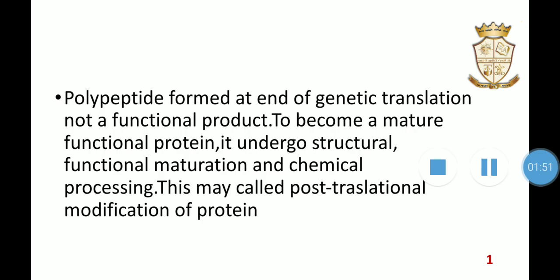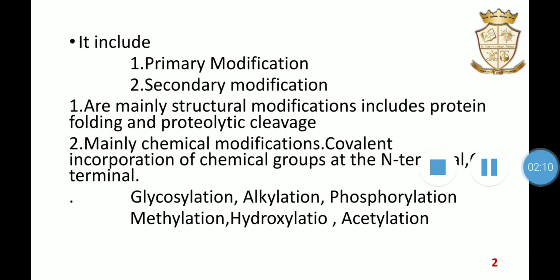The PTPM involves many covalent binding and enzymatic modifications of inactive nascent protein. It mainly includes two modifications: primary modifications and secondary modifications. Primary modifications are mainly structural modifications, which include protein folding and proteolytic cleavage. Secondary modifications are mainly chemical modifications.